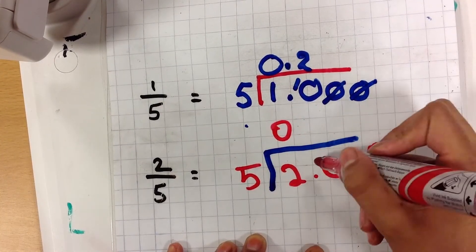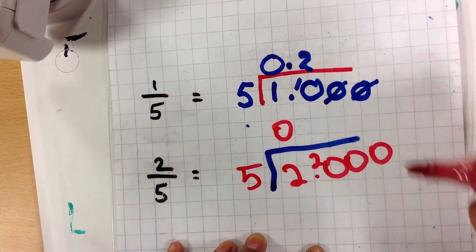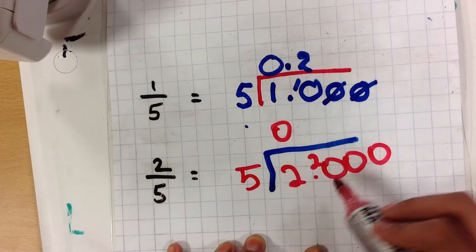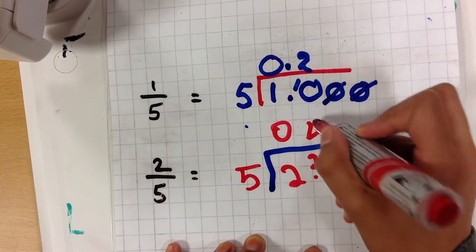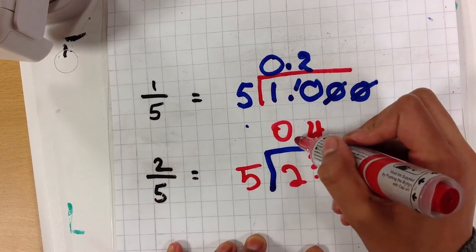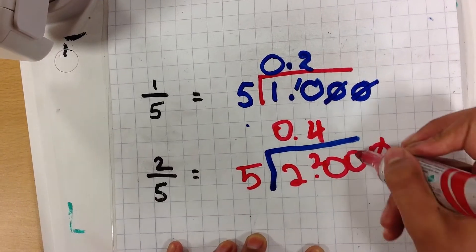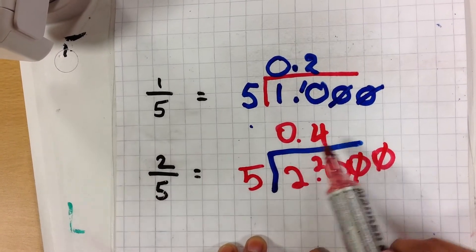0. You carry the 2 over, which makes 20. How many fives go into 20? 4. Don't forget to bring the point up. You can cross these two zeros off. So the answer is 0.4.